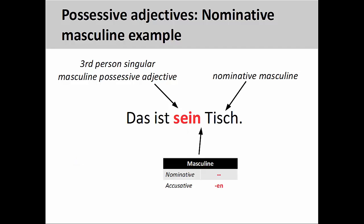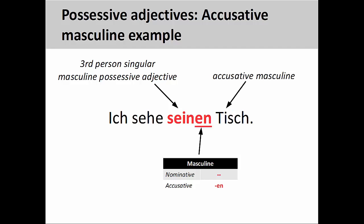But since the masculine noun Tisch is in the nominative case, the ending for the possessive adjective must also be masculine nominative. This changes, however, when the masculine noun is in the accusative case. 'Ich sehe seinen Tisch' — I see his table. The possessive adjective still agrees with the number and gender of the understood possessor, but here the ending must show that the adjective modifies a masculine noun in the accusative case.